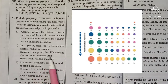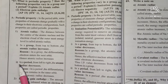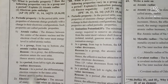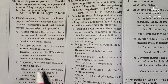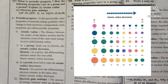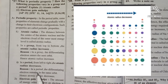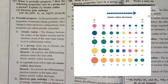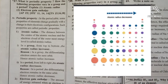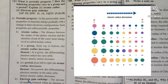In a period, from left to right, the atomic radius decreases. The reason is that in a period, the differentiating electron remains in the same orbit — it does not jump to another orbit. Hence, the atomic radius decreases.